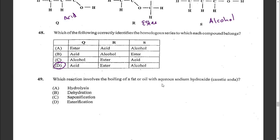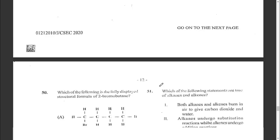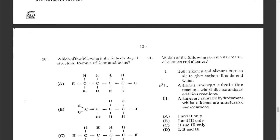Question forty-nine: esters undergo hydrolysis. There are two types of hydrolysis that esters undergo — acid hydrolysis or base hydrolysis. The answer is A.